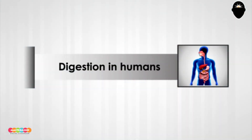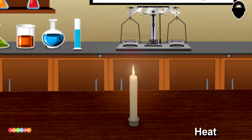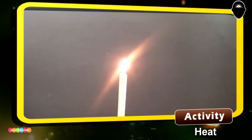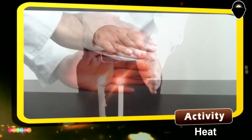Digestion: the digestive system is a group of organs working together to convert food to energy and basic nutrients to feed the entire body. Food passes through a long tube inside the body known as the alimentary canal.